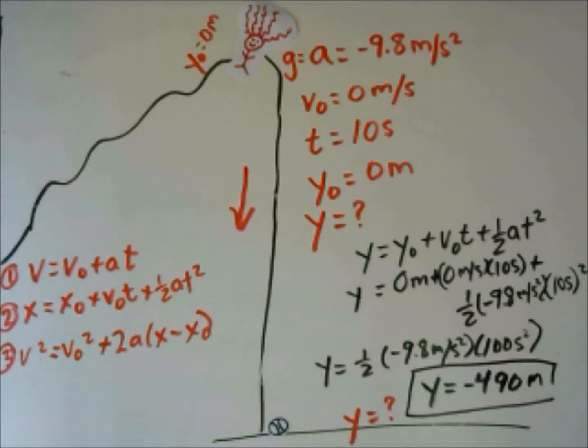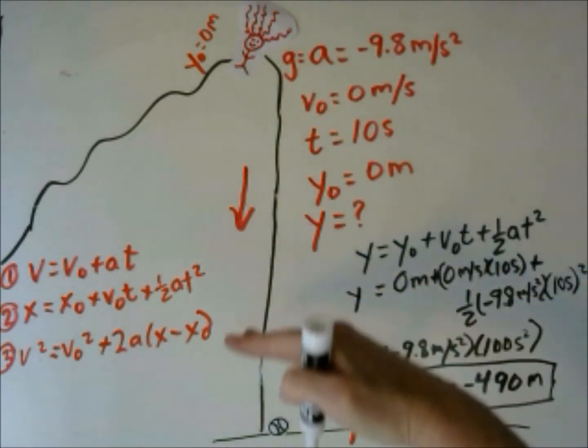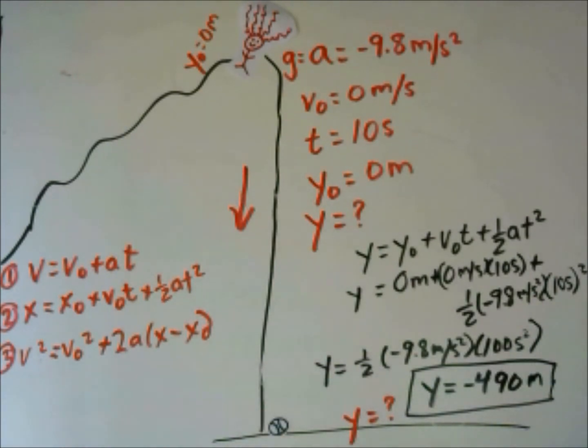So the calculated answer is negative 490 meters. Does that make sense that it is negative? Well, we defined her starting point as 0, and this has to be in the negative direction. If we got an answer as positive, it would mean the ball went up into the air, and it didn't. So this is correct, but that tells us that the height of the cliff is 490 meters.